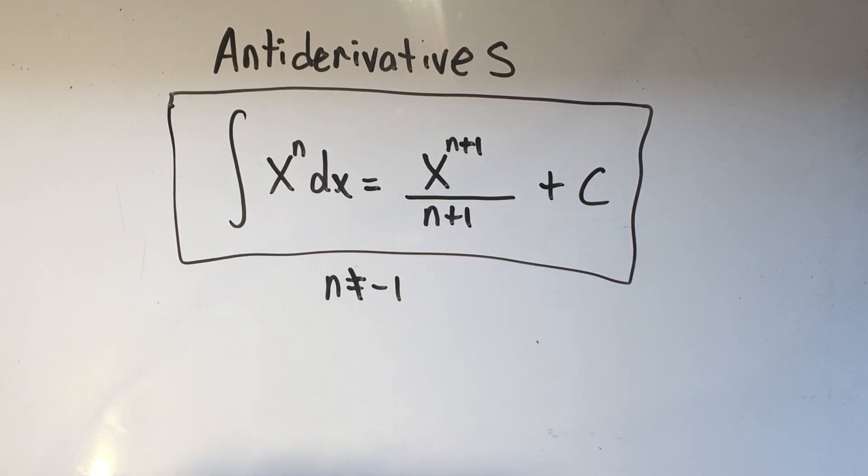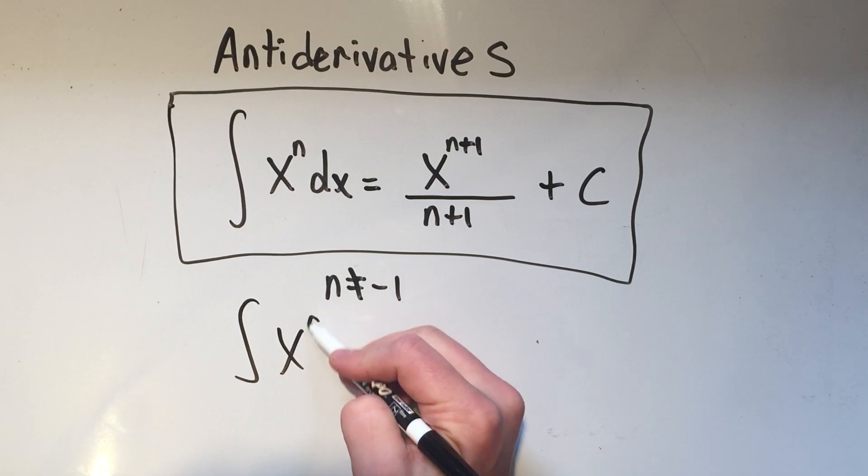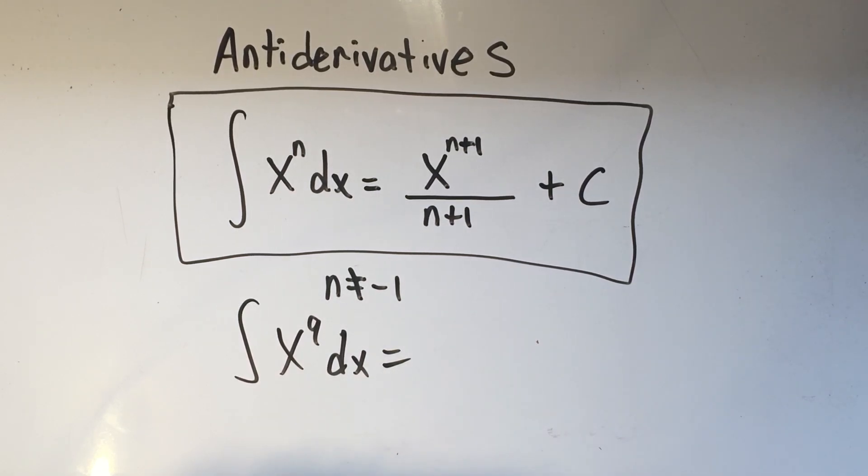There's your introduction to anti-derivatives. I guess I should be full circle and do this problem now that I've told you how to do it. If you want to take the anti-derivative of x to the ninth, you add one to the power and divide by the new power. You can check that if you take the derivative of this thing on the right, you will get x to the ninth. There's your anti-derivative introduction. I hope you got something out of it. Please like and subscribe and have a great day.